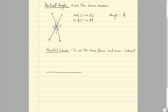Let's look at two parallel lines cut by a transversal. This transversal could be any line going through at any angle. A transversal is a line that intersects two parallel lines. When I set this up with parallel lines M and N, what ends up happening is I have eight angles formed.